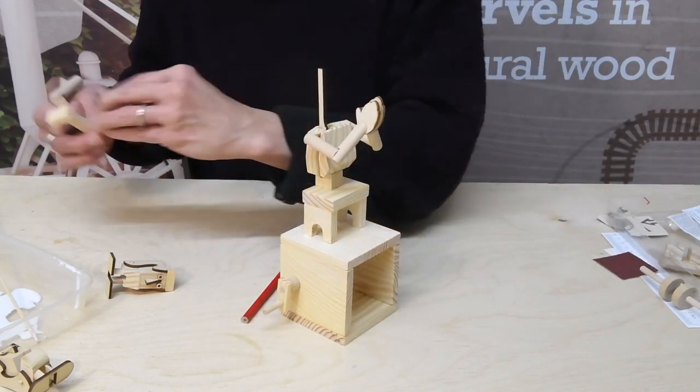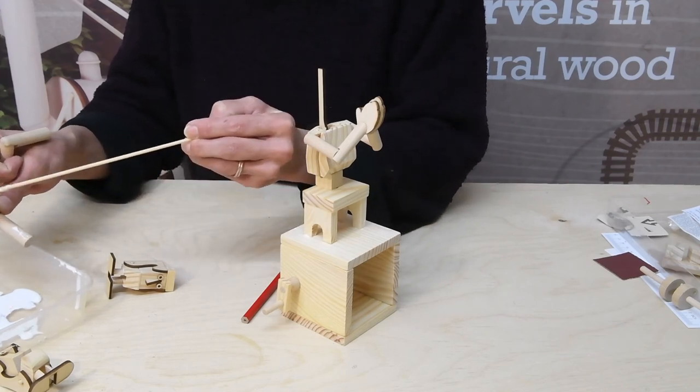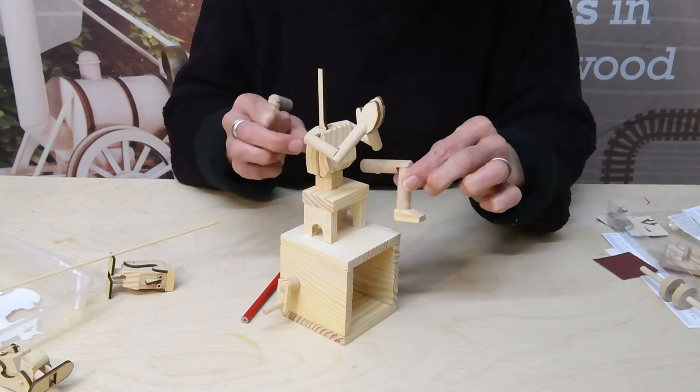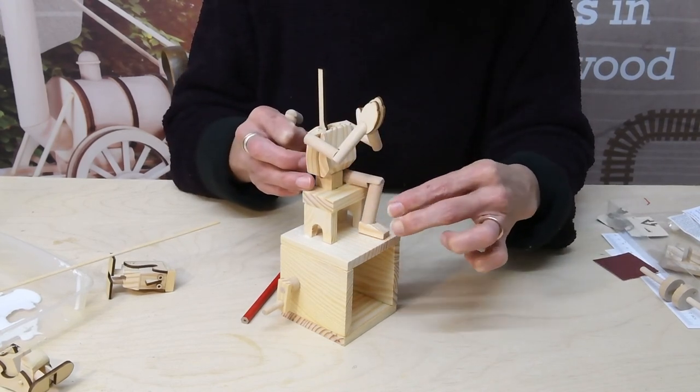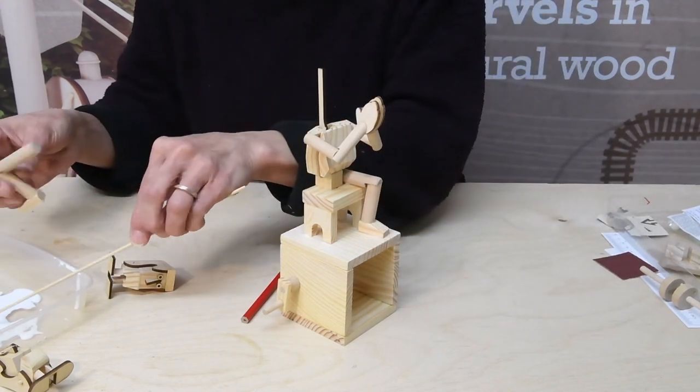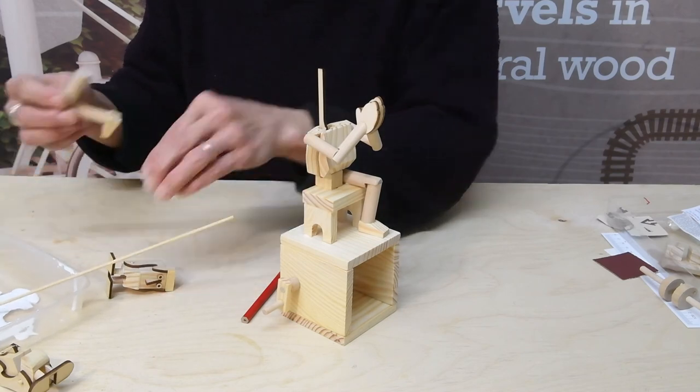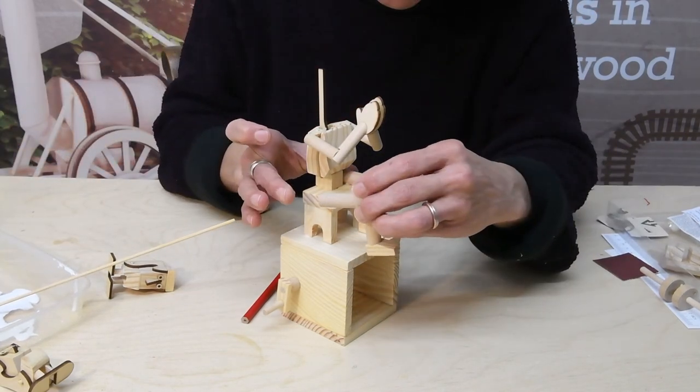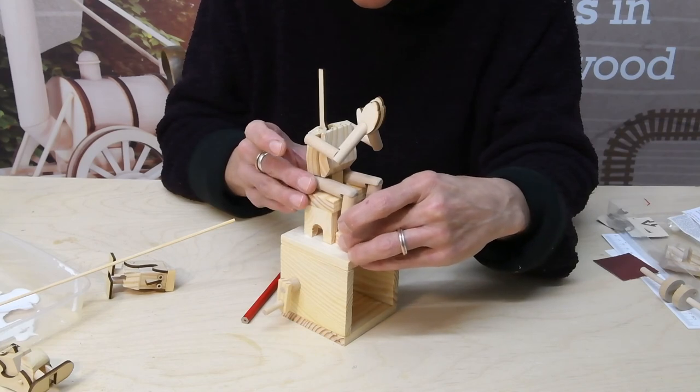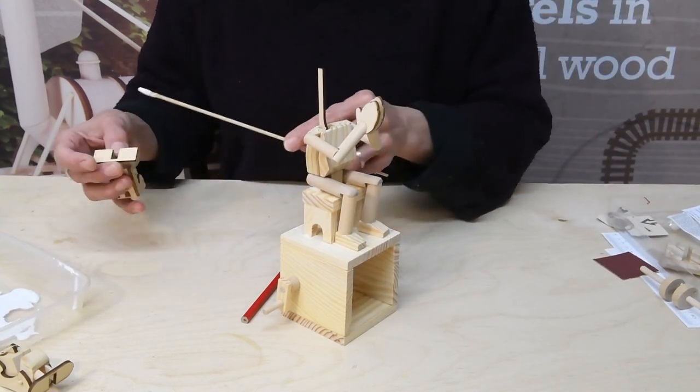Okay and then the legs can go on. A little bit of glue under the foot and under the thigh. You can play with the angle of the legs. They don't have to go perfectly straight.